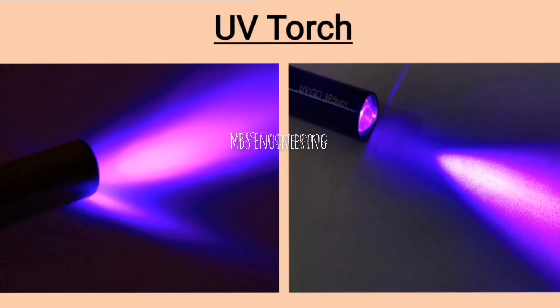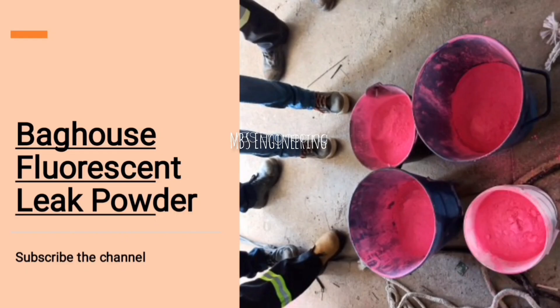Please see the high intensity ultraviolet torch or UV light, which plays an important role in the leak detection test. Also, please see the fluorescent leak powder in pink color, which is an important component in the leak detection test.